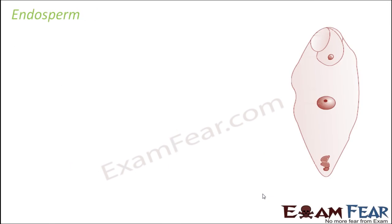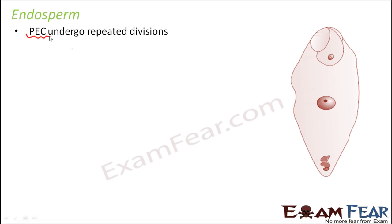So first let us talk about endosperm. What is endosperm? Let us see what it is, how it develops, when it develops, and everything related to it. Now as I mentioned, as a result of fertilization, primary endosperm cell is formed. This primary endosperm cell is a triploid cell, and this triploid cell later undergoes repeated division and forms the endosperm.